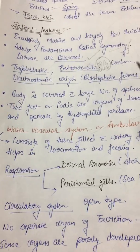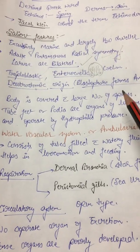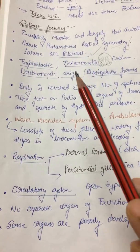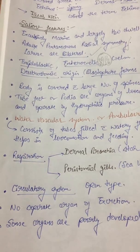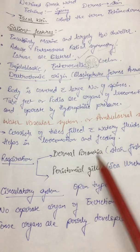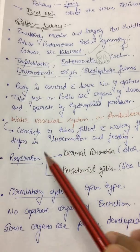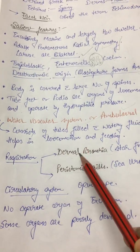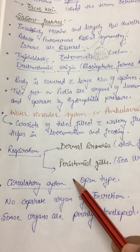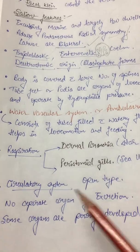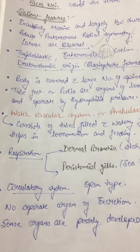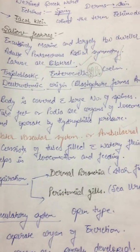Their body structure: they have spines. For locomotion they have podia. They have a water vascular system. For respiration they have dermal branchia or peristomal gills. Their circulatory system is open type, there is no separate organ of excretion, and sense organs are poorly developed. Mentioning five such points in characteristics is sufficient.